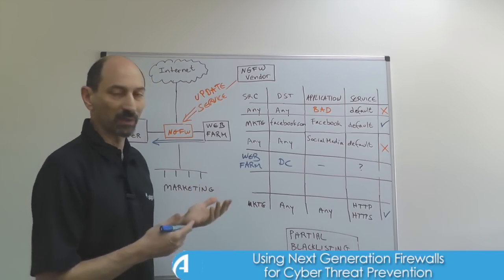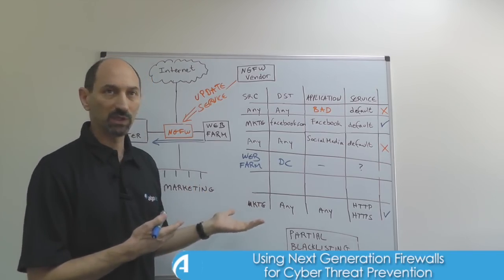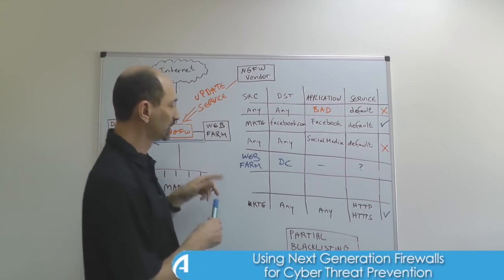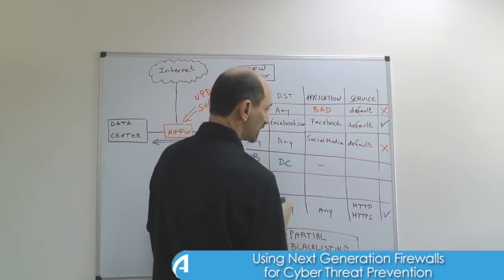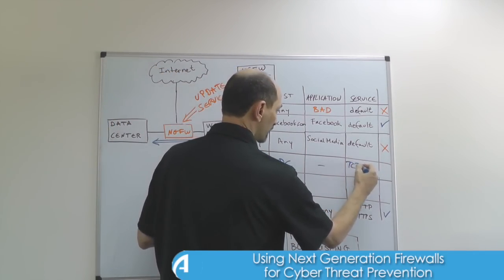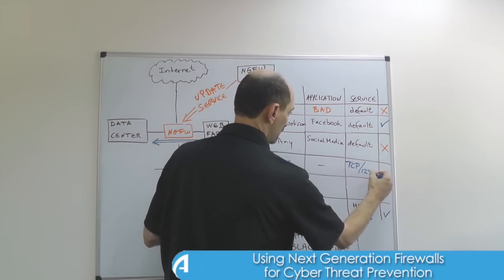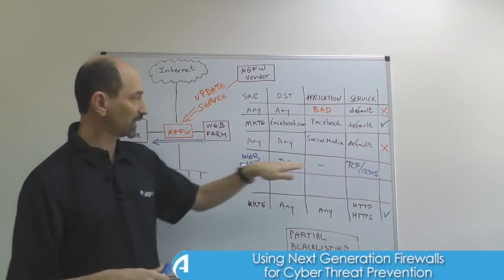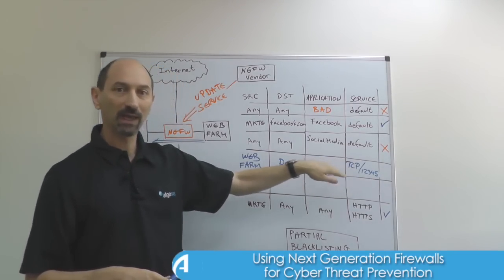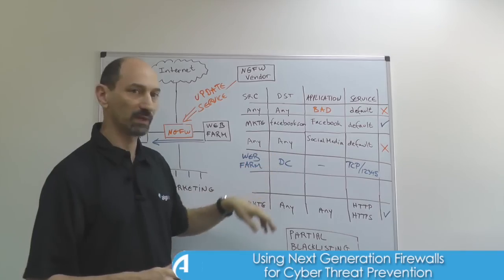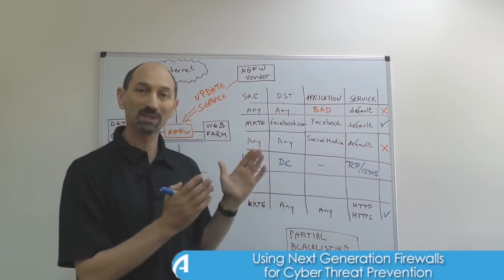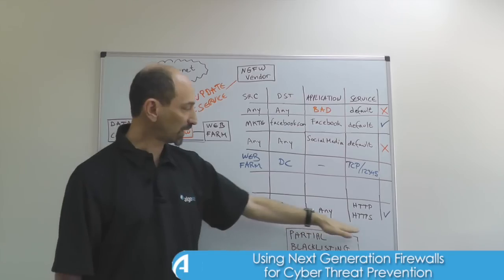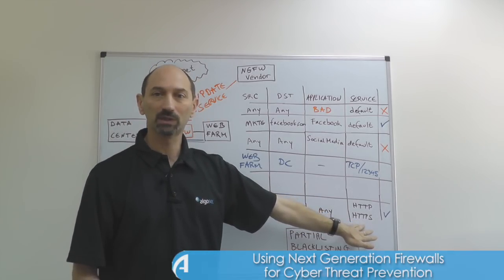So probably the best approach here is to use a non-default port and tell your developers not to use the default, but to use some made-up port just for this — just so that you can filter that traffic based on the port in a way that is more reliable and more specific than just allowing all traffic through something like HTTP or HTTPS.